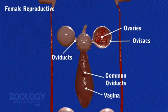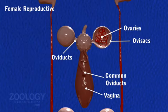Female Reproductive Organs. Female reproductive organs are compact and include ovisacs, ovaries, oviducts, common oviduct, and vagina.